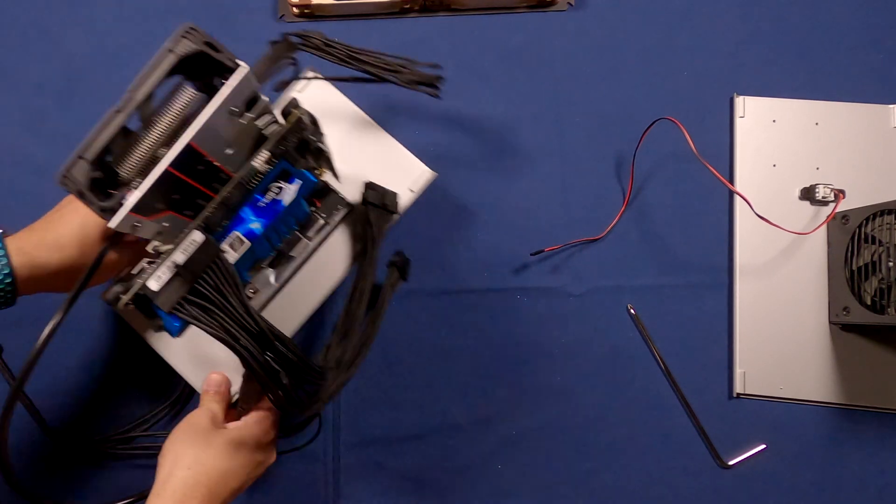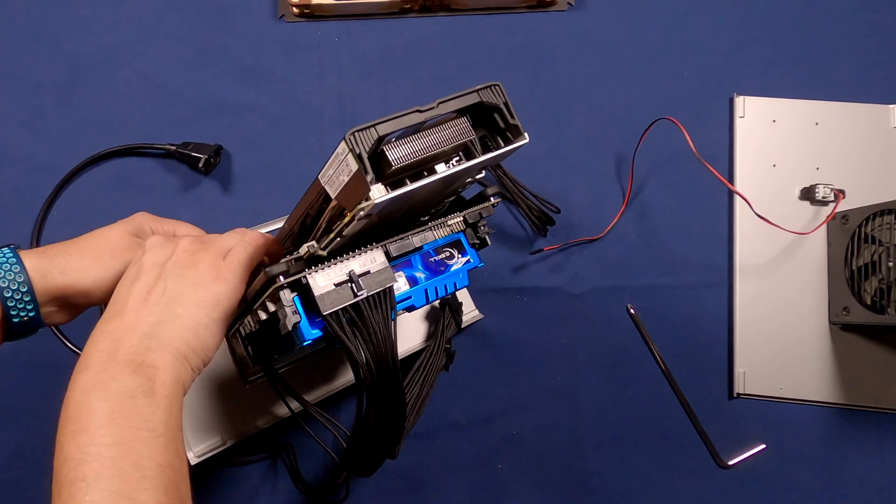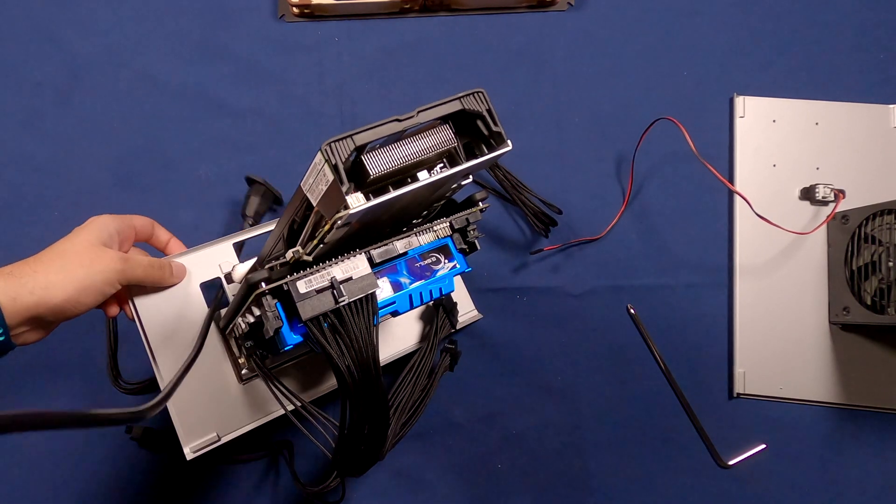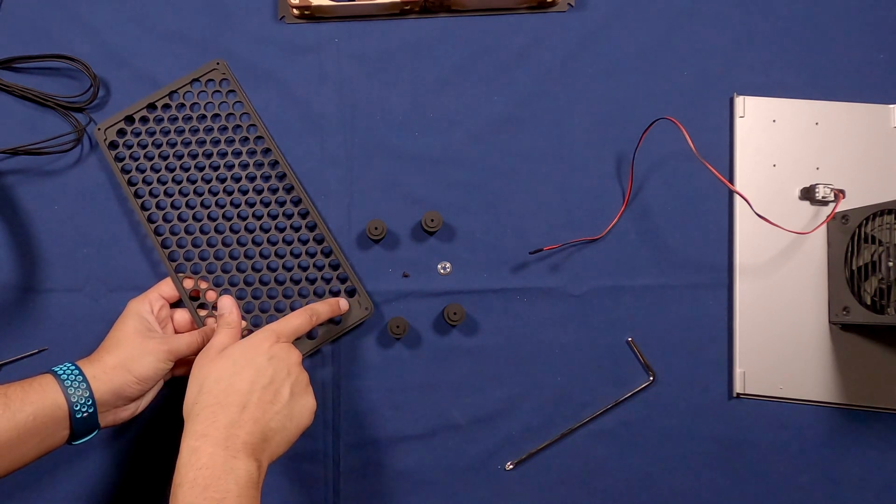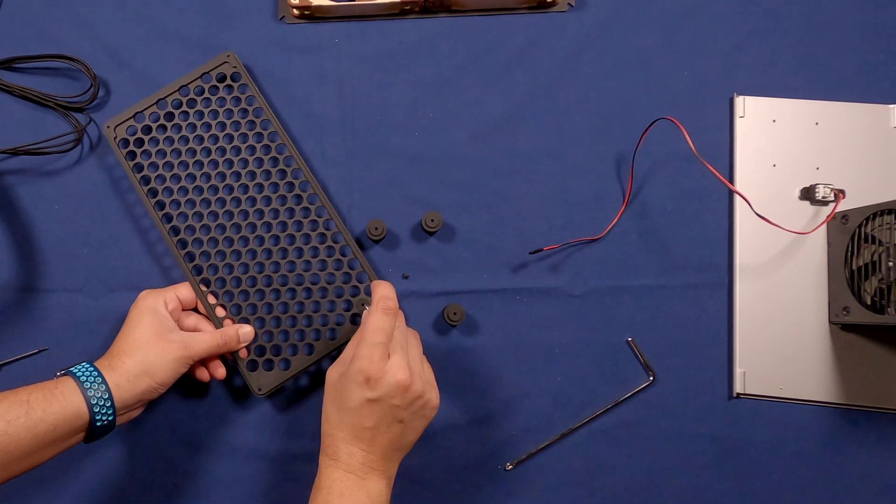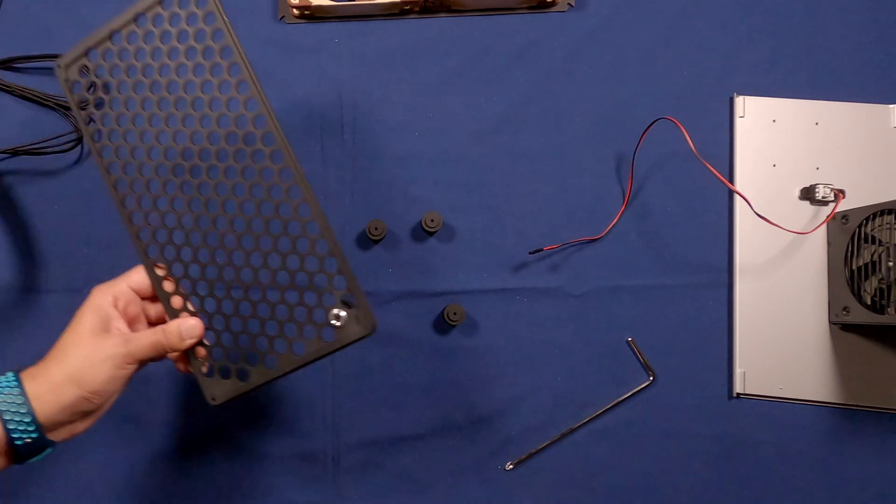At this point it's a good idea to thread your power cable through the rear panel and screw it into place. Once that's done we're going to grab the bottom plate and attach the feet to it. Put the feet through the holes and then use the little washers to secure the feet into place.